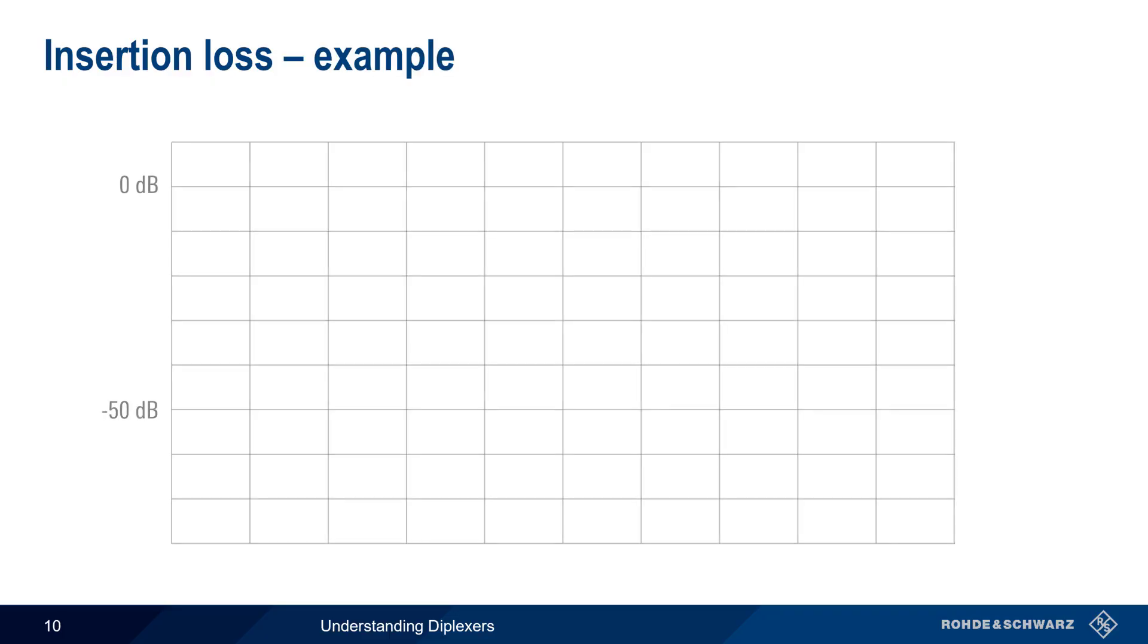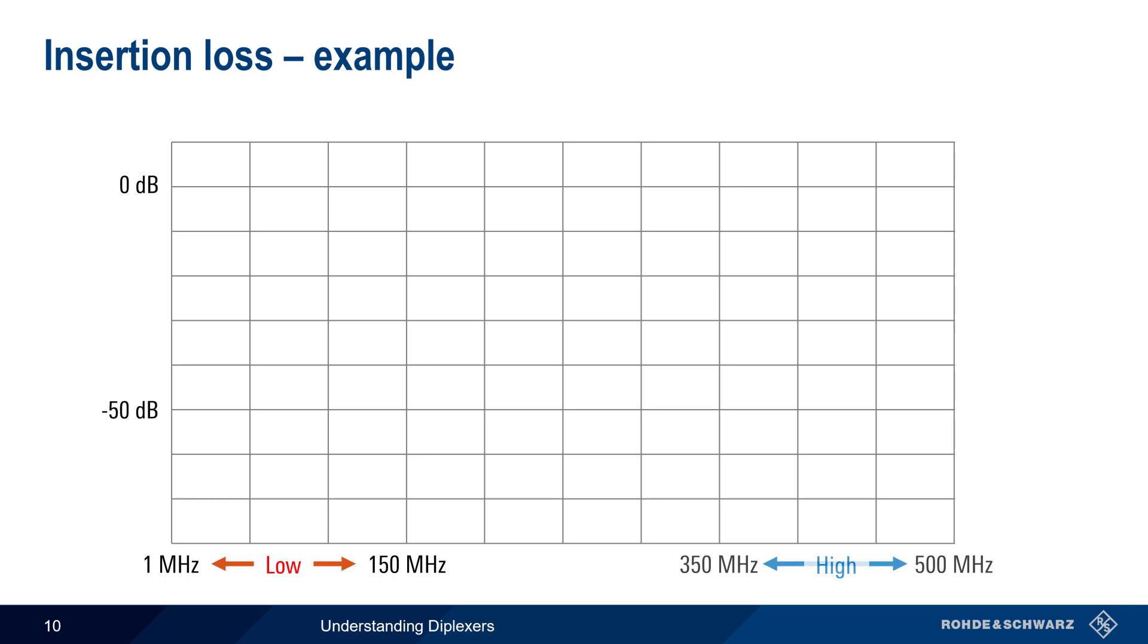Let's look at an example insertion loss measurement. For this diplexor, the low frequency range is specified as 1 MHz to 150 MHz, and the high frequency range is specified as 350 MHz to 500 MHz. We'll shade each region for ease of interpretation.